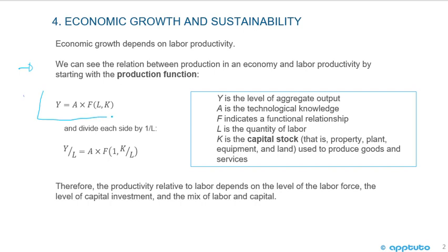So recall here's the production function, Y equals A times F to the brackets L comma K, where Y is the level of aggregate output, A is the technological knowledge, F indicates a functional relationship between L, which is the quantity of labor, and K, which is the capital stock, that is property, plant and equipment, and land used to produce goods and services.